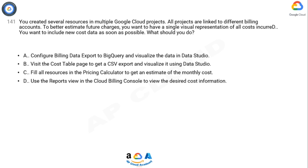A. Configure billing data export to BigQuery and visualize the data in Data Studio. B. Visit the cost table page to get a CSV export and visualize it using Data Studio. C. Fill all resources in the pricing calculator to get an estimate of the monthly cost. D. Use the reports view in the cloud billing console to view the desired cost information.